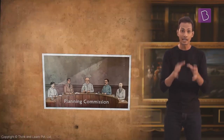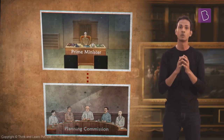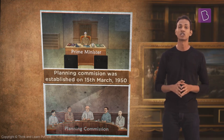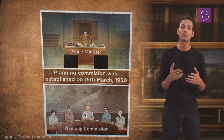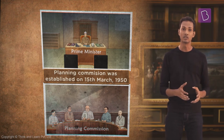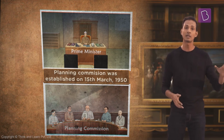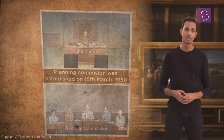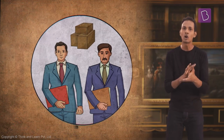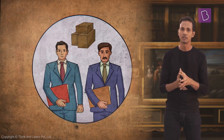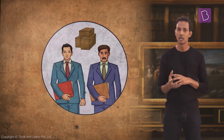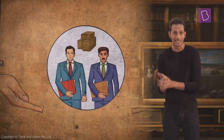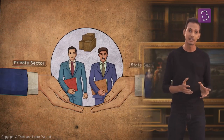A planning commission, which reported directly to the Prime Minister, was established on 15th March 1950 to design policies and come up with developmental plans for the economic development of the country. A mixed economy model was adopted, where the means of production and job creation are held by both the states and the private sector.